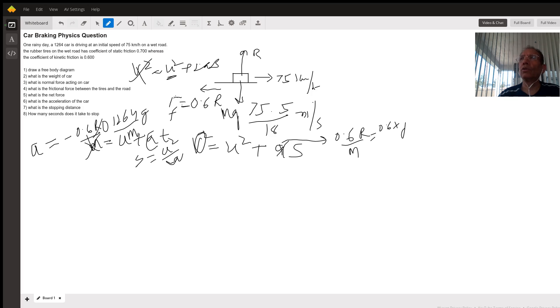You already know the deceleration, which is the force of friction divided by mass, where the mass is 1264 kg. You can find the time taken using the formula v equals u plus at, where a is negative. Hope this helps. Thank you.